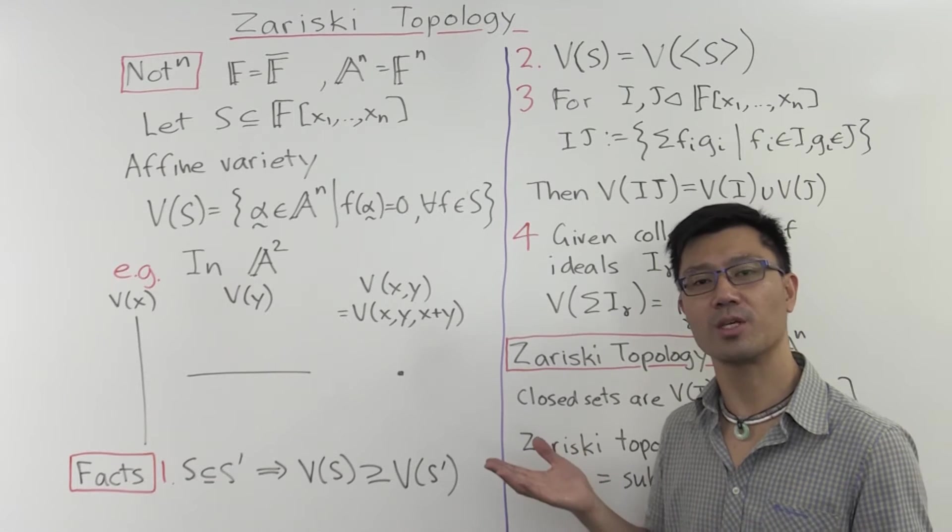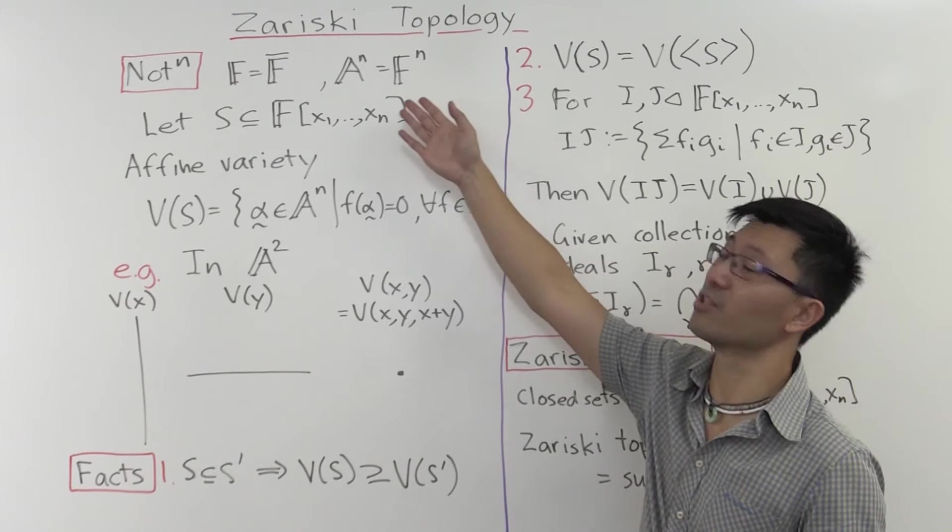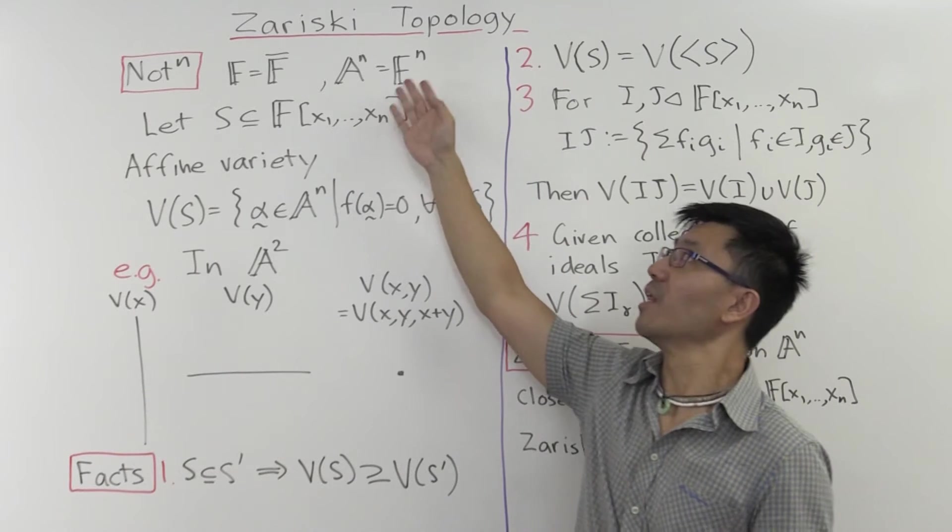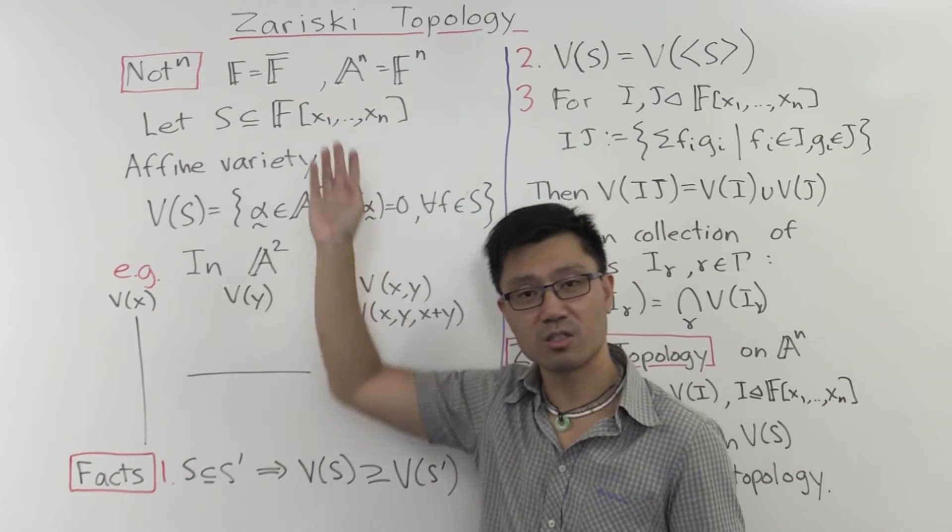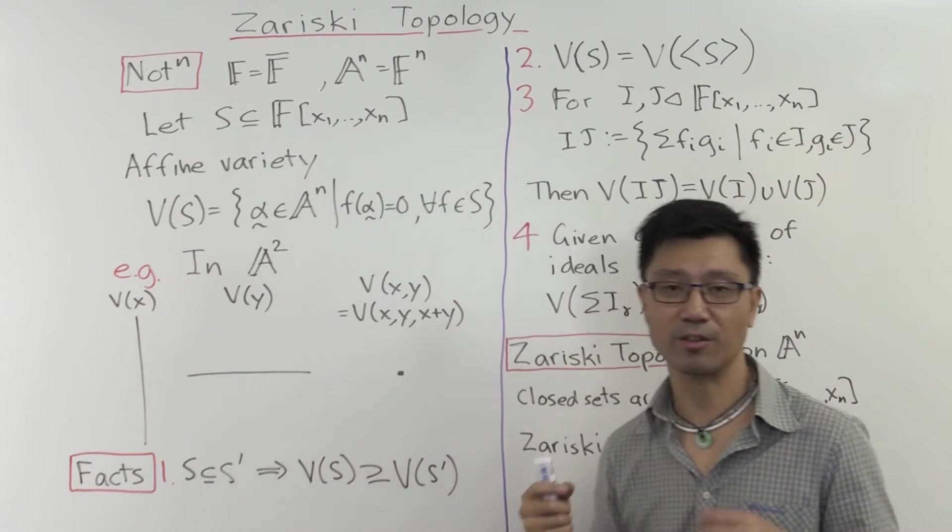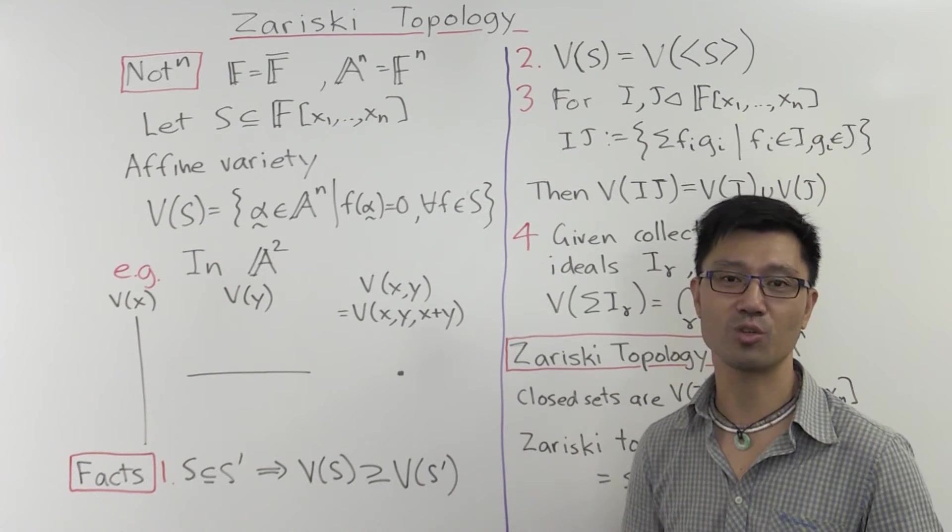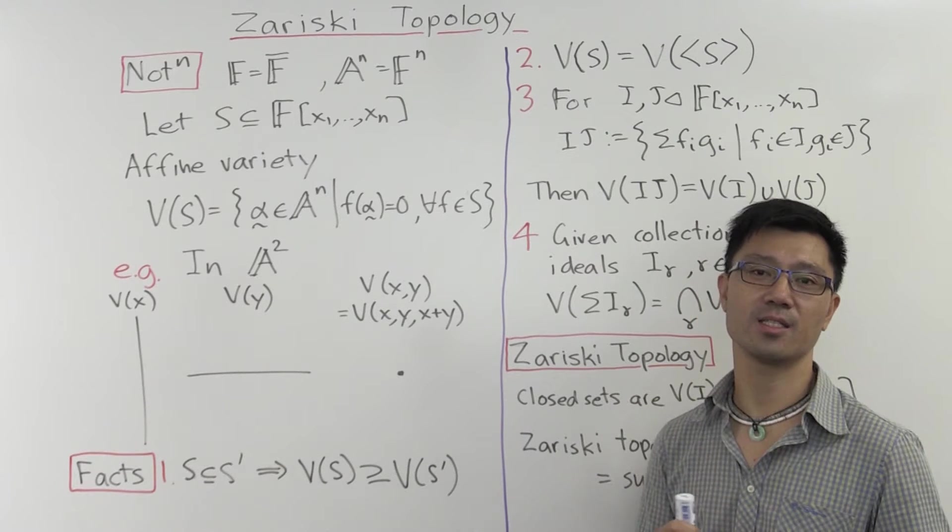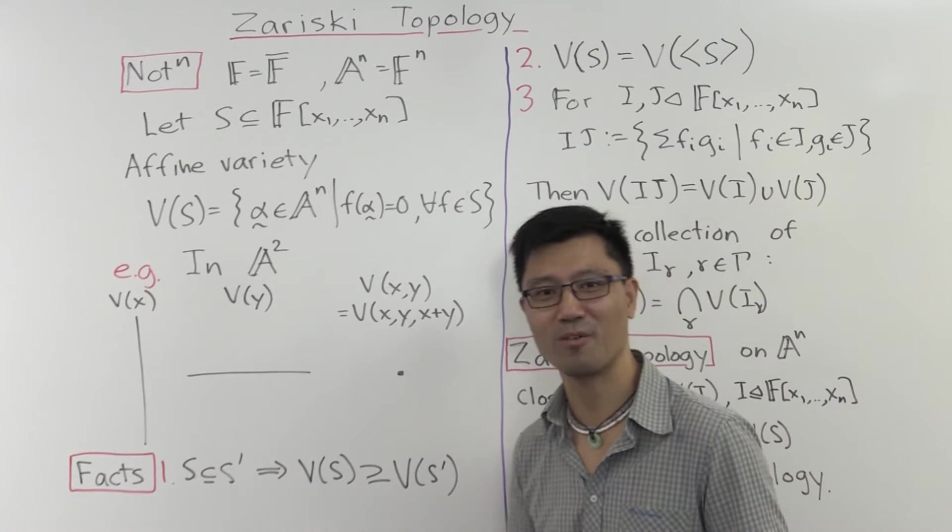And I'll do this by introducing something called the Zariski topology. This topology is named after Oscar Zariski, who is one of the founding fathers of the American School of Algebraic Geometry, and incidentally also my supervisor's supervisor.